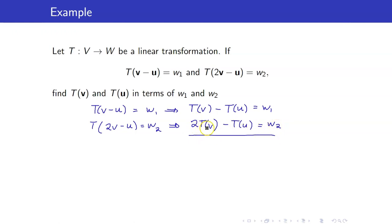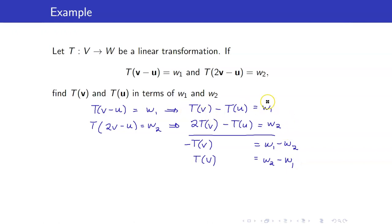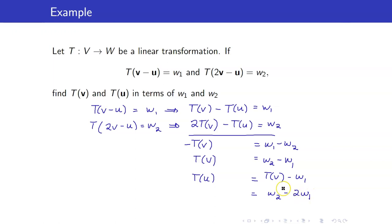This is just a system of linear equations. When I solve for T of V by subtracting, T of V minus 2T of V is negative T of V, giving us W1 minus W2. So therefore T of V is equal to W2 minus W1. From the first equation, T of U is equal to T of V minus W1. But T of V is already W2 minus W1, so therefore this is W2 minus 2W1. And that is your T of U.